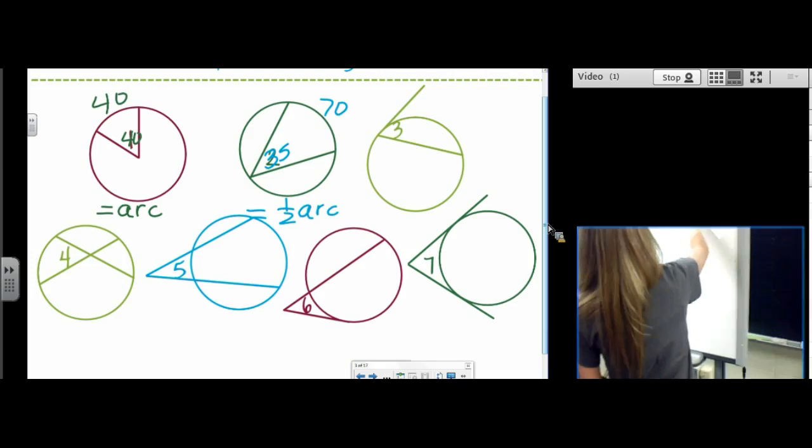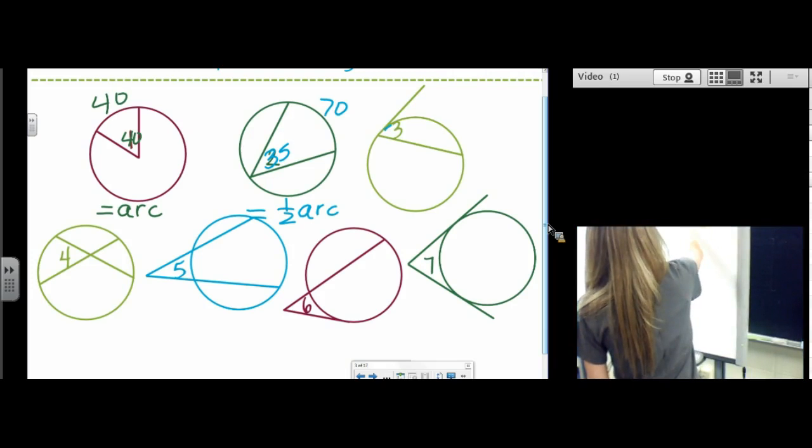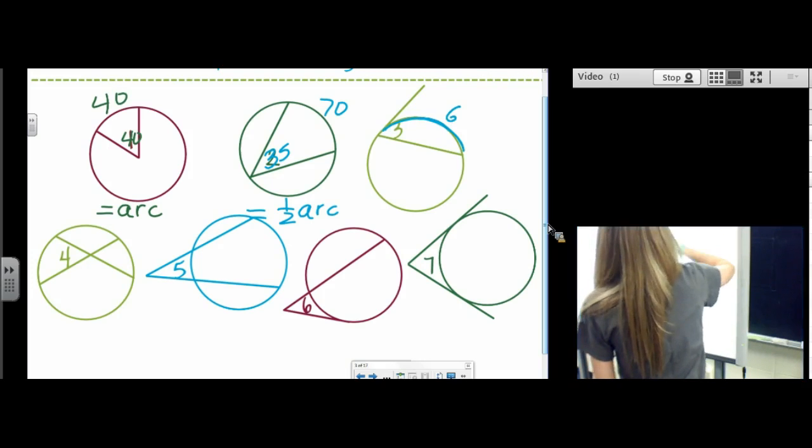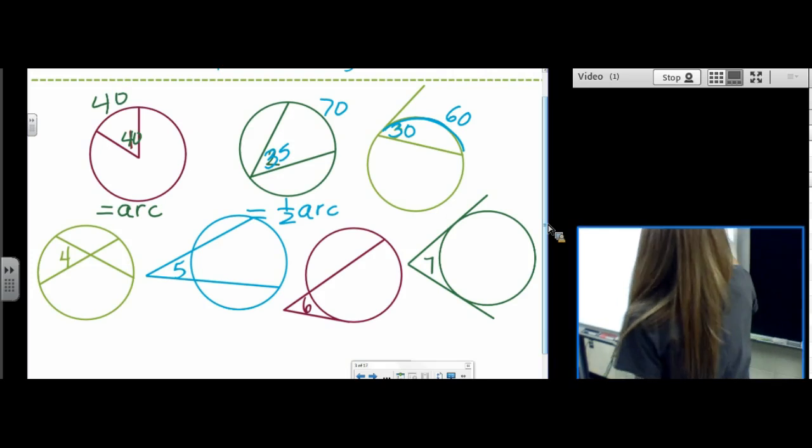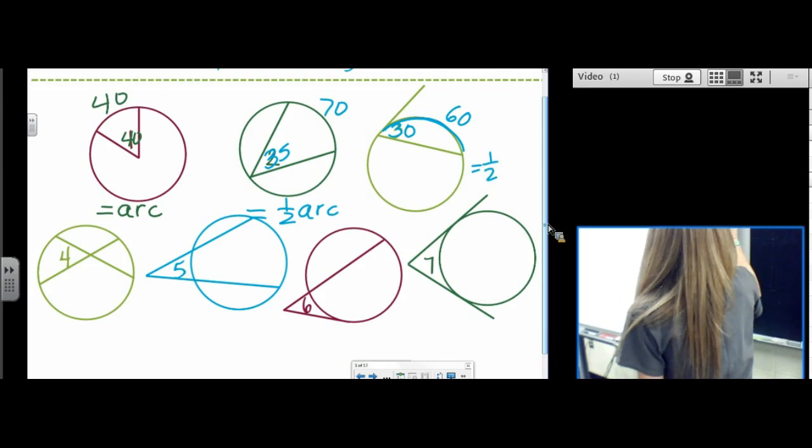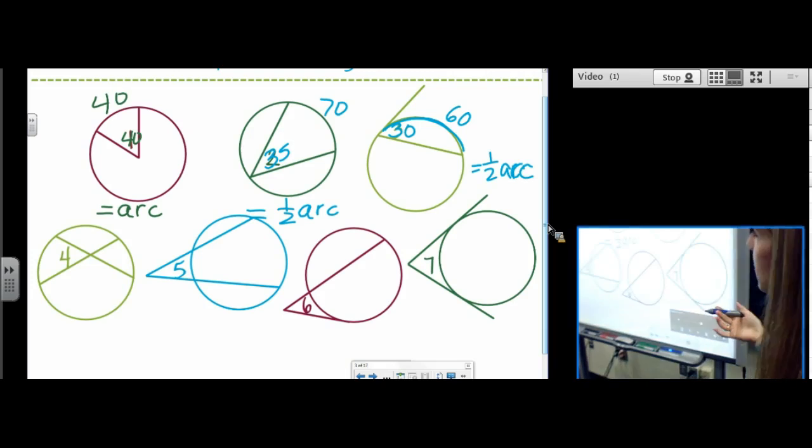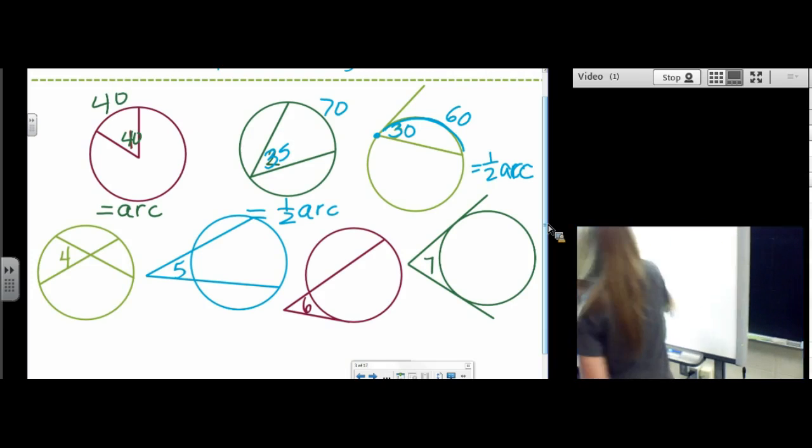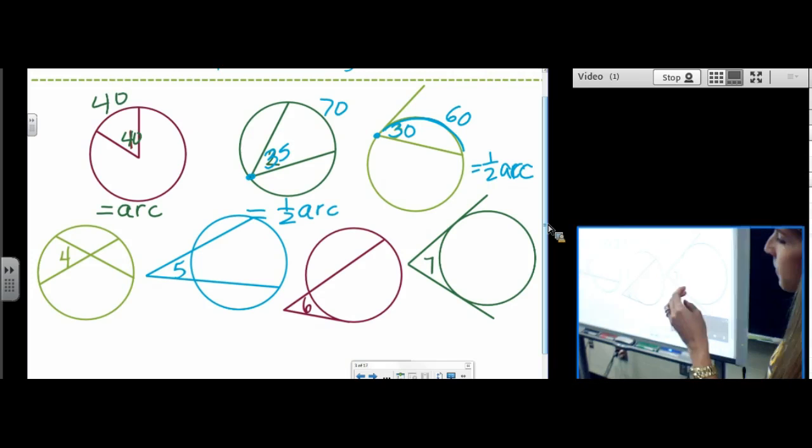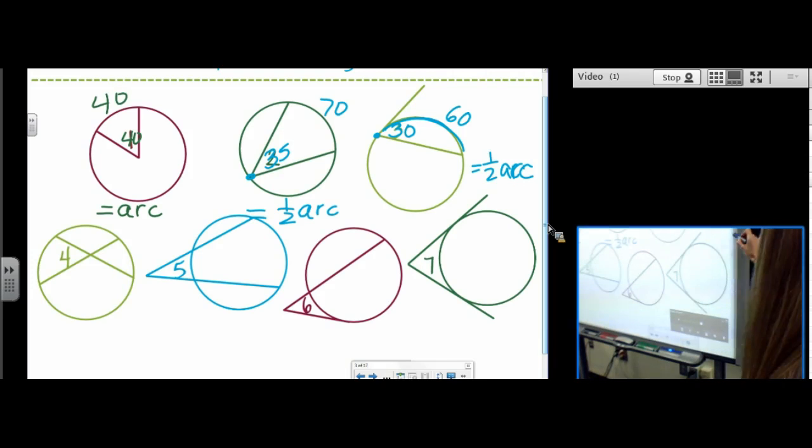Number three, it's not an inscribed angle, but you can treat it just like an inscribed angle. So if this angle is 60... oh sorry, if that arc is 60, then this angle is 30. So we treat it just like an inscribed angle because the angle is on the circle, the vertex is on the circle. So equals the arc, one half the arc, one half the arc.